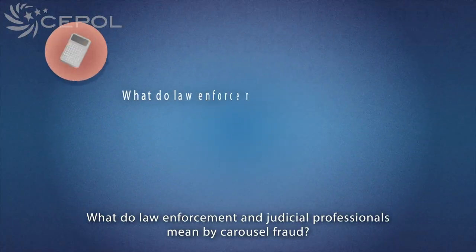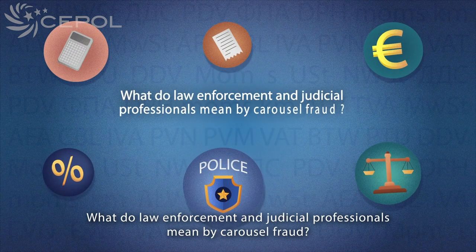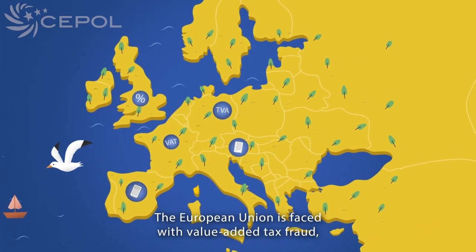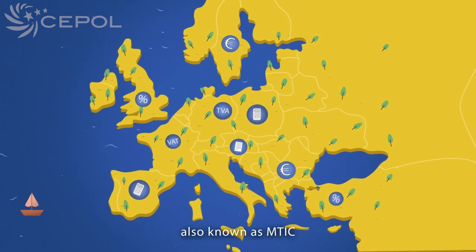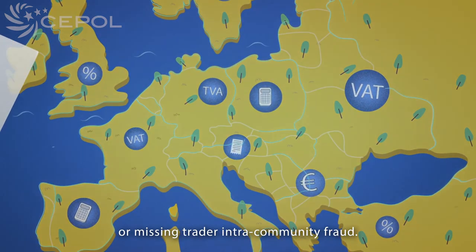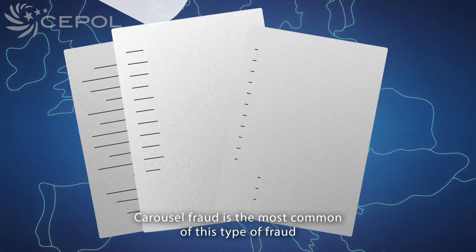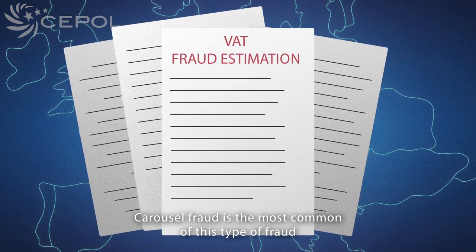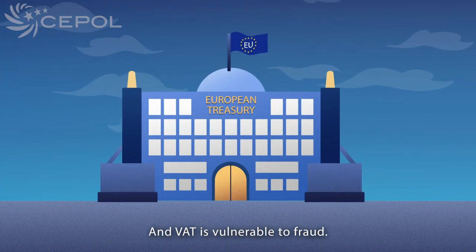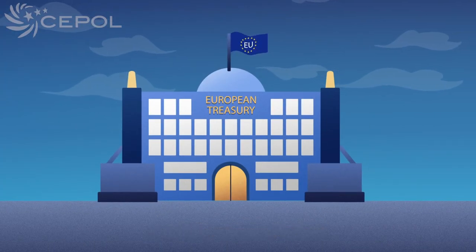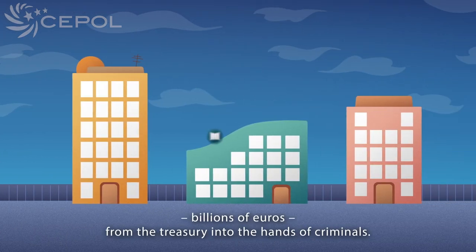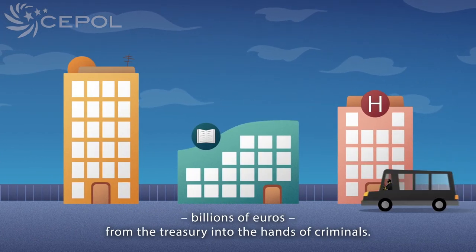What do law enforcement and judicial professionals mean by carousel fraud? The European Union is faced with value-added tax fraud, also known as MTIC or Missing Trader Intra-Community Fraud. Carousel fraud is the most common of this type of fraud that causes high tax losses within the EU. VAT is vulnerable to fraud — it is possible to lure real money, billions of euros, from the Treasury into the hands of criminals.